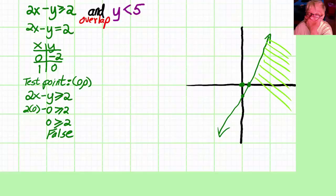So I shade the other side of the line from my test point because my test point gave me a false answer. Now I graph the other inequality. I turn y is less than 5 into a line.